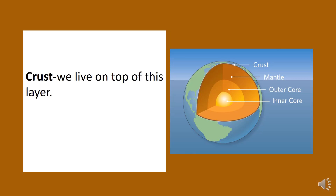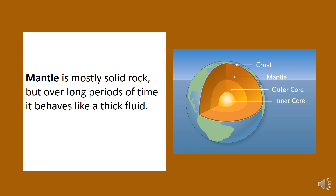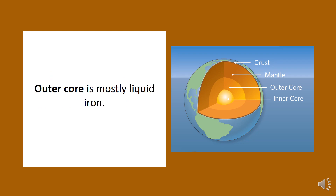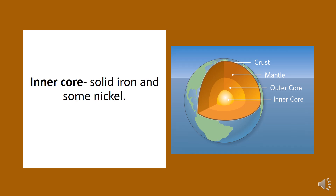The first layer is the crust — we live on top of this layer. Underneath the crust lies the mantle, which is mostly solid rock, but over long periods of time it behaves like a thick fluid. Underneath the mantle lies the outer core, which is mostly liquid iron. And finally, we have the inner core, which is solid iron and a little bit of nickel thrown in for good measure.